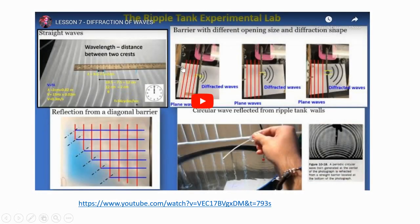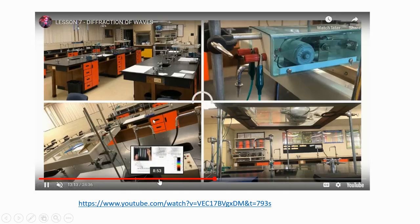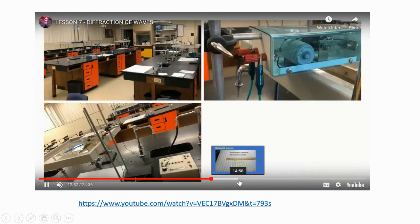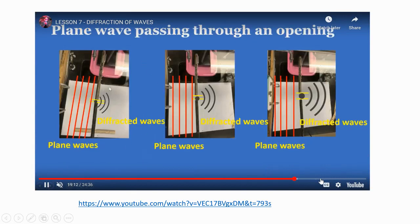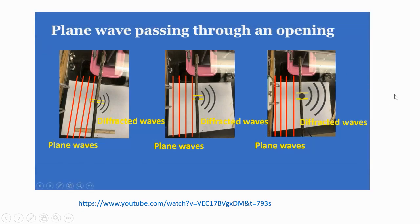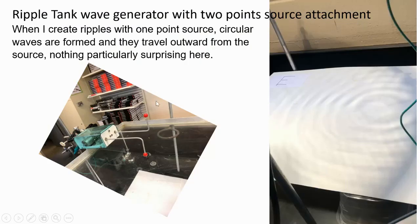If you need a review about ripple tank parts and operation, and a couple of examples of our ripple tank labs, please check our video lesson 7, diffraction of waves. For this application we need the ripple tank wave generator with a two-point source attachment.